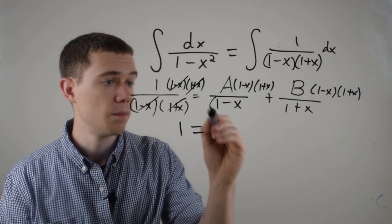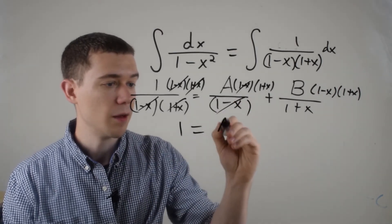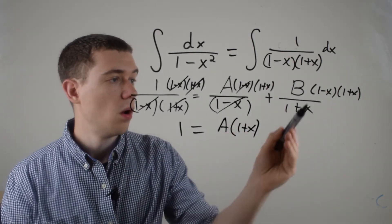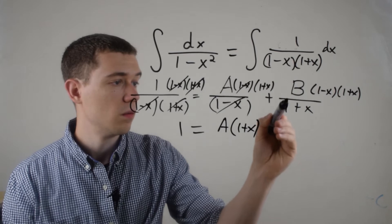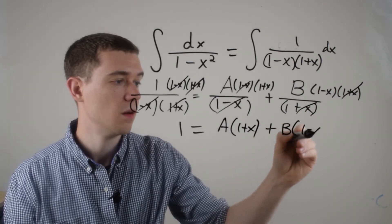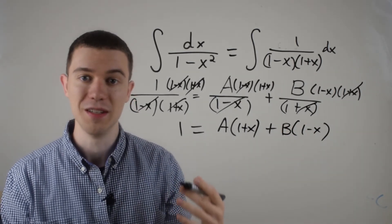Some nice cancellations happen. Because on the left, the 1 minus x is cancelled, the 1 plus x is cancelled, and I'm just left with 1. Nice. Right here, only the 1 minus x is cancelled, and I'm left with A times 1 plus x. Over here, with the B, the 1 plus x is cancelled, so I'll be left with B times 1 minus x. And this is a lot easier of an equation to deal with.